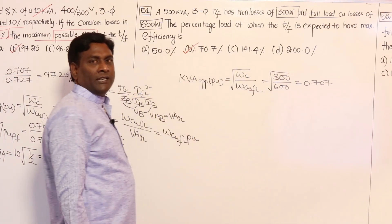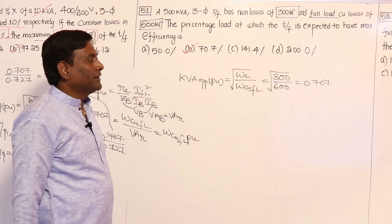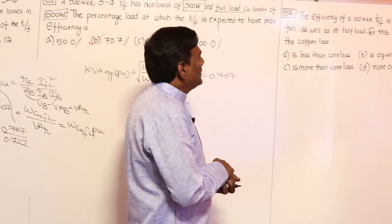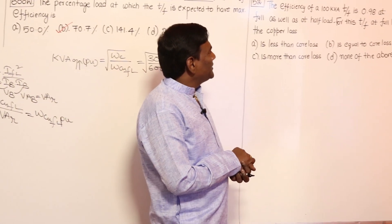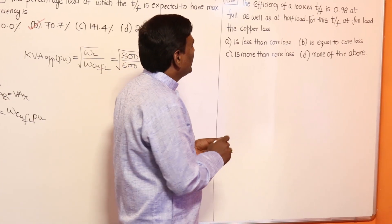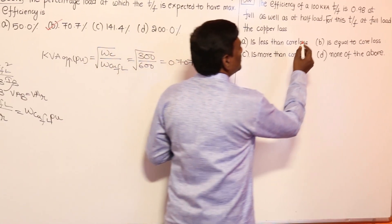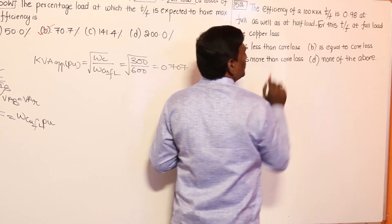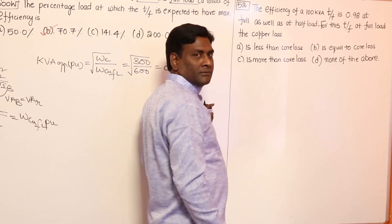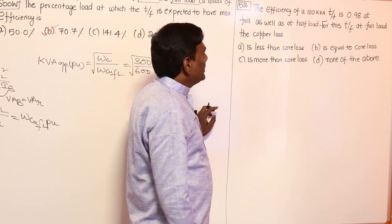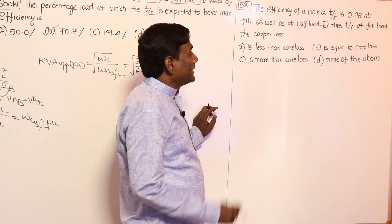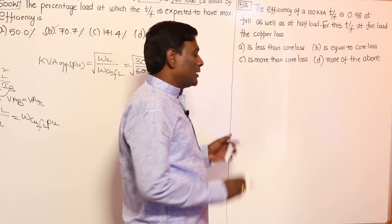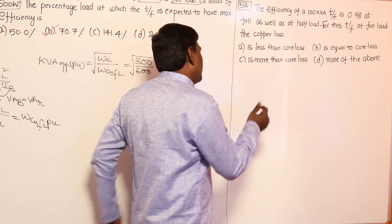Now let us take one more question. The efficiency of a 100 KVA transformer is 98 percent at full load as well as at half full load. So efficiency is 98 percent at both full load and half full load.